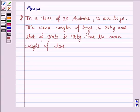Hello students, let's work out the following problem. In a class of 25 students, 15 are boys. The mean weight of boys is 50 kg and that of the girls is 45 kg. Find the mean weight of the class. Let's now move on to the solution.